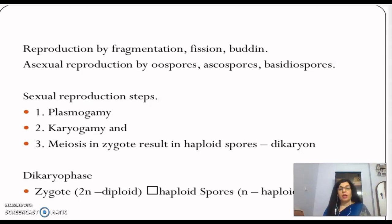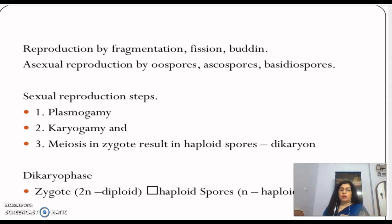The reproduction mode in fungi can be different. Vegetative reproduction occurs through fragmentation, fission, and budding — we see budding in yeast, where it grows and then gets detached from the body and develops into a new individual. There is also asexual reproduction by spores and basidiospores, and sexual reproduction.